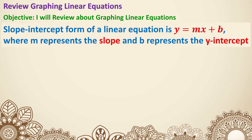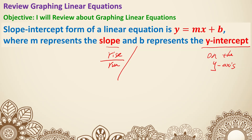Slope-intercept form of a linear equation is y equals mx plus b. That is the one topic that you spent quite a bit of time on last year, which was the main focus last year. So in this equation, y equals mx plus b, m represents the slope, and b represents the y-intercept. The y-intercept is a point on the y-axis, and the slope is rise over run, or in other words, change in y over change in x.